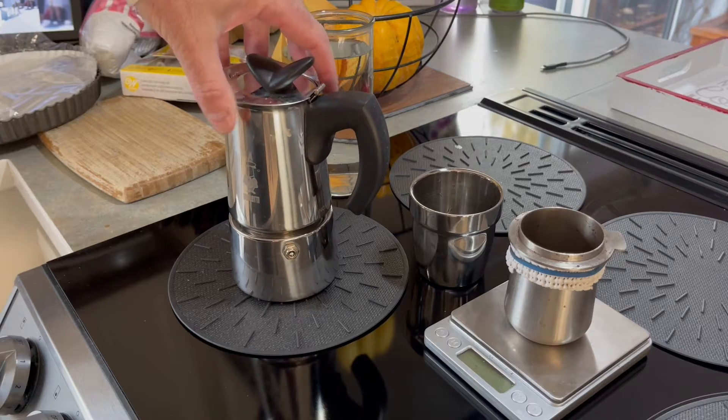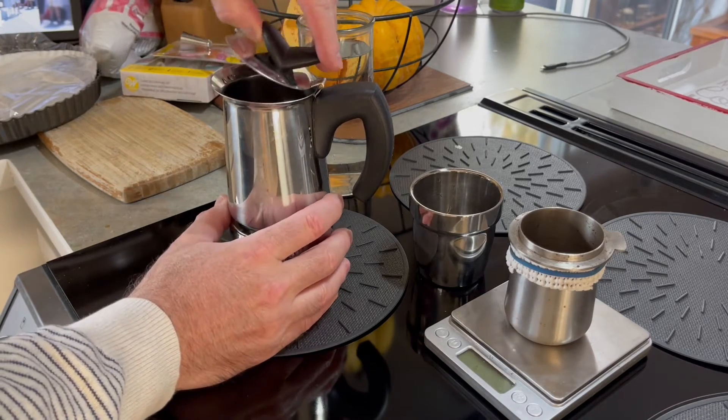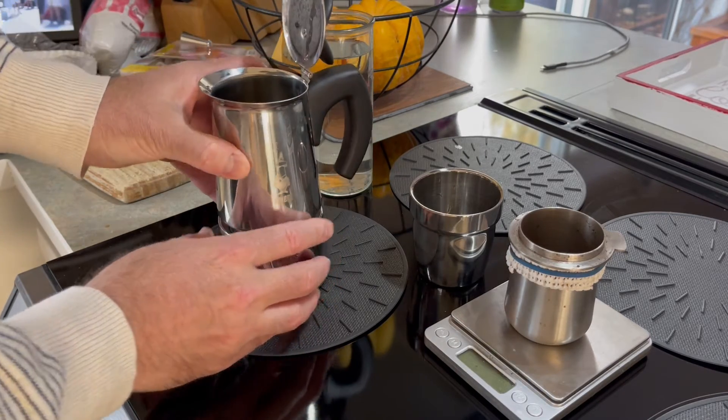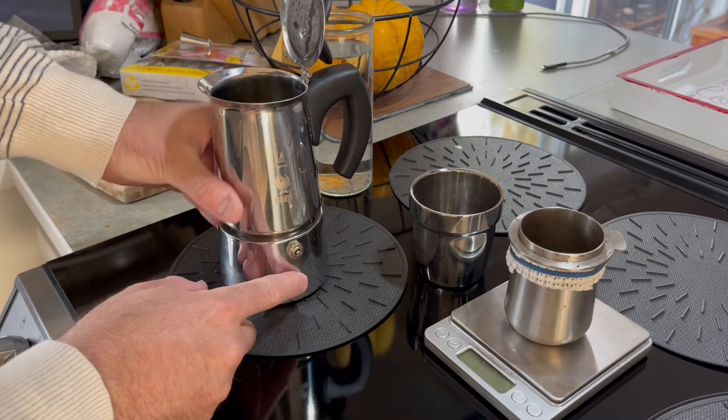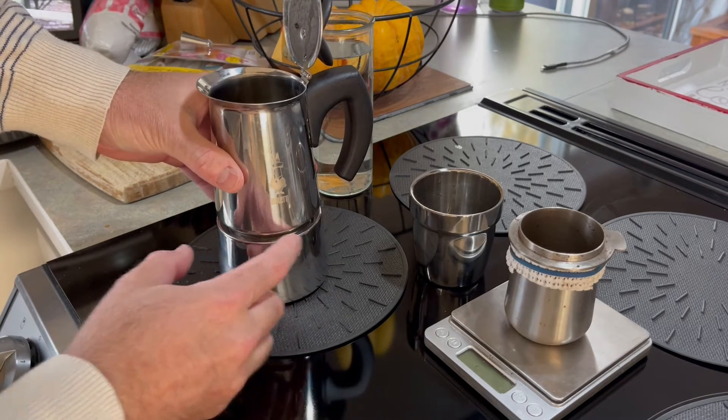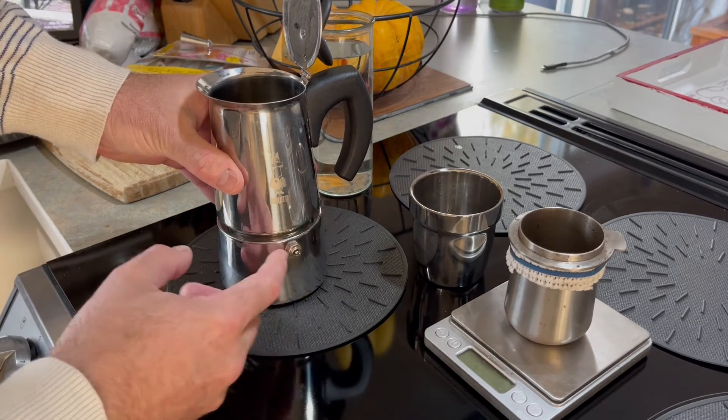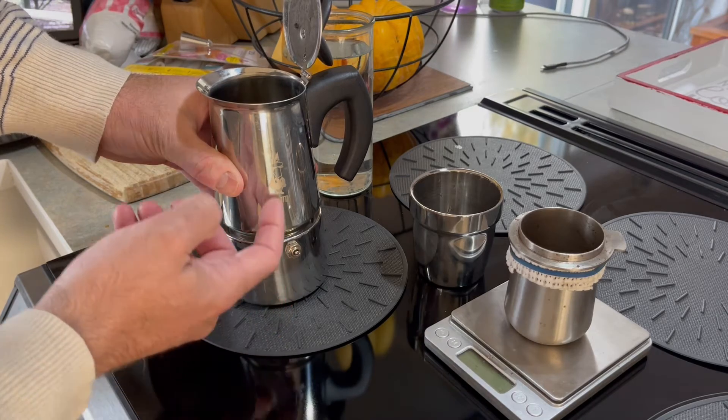Let me show you what a Bialetti mocha pot is for those not familiar. Water goes in the bottom, there's a coffee grounds strainer inside, and pressure builds up, pushing it upward into the top chamber where it comes out, spills outward, and fills up.